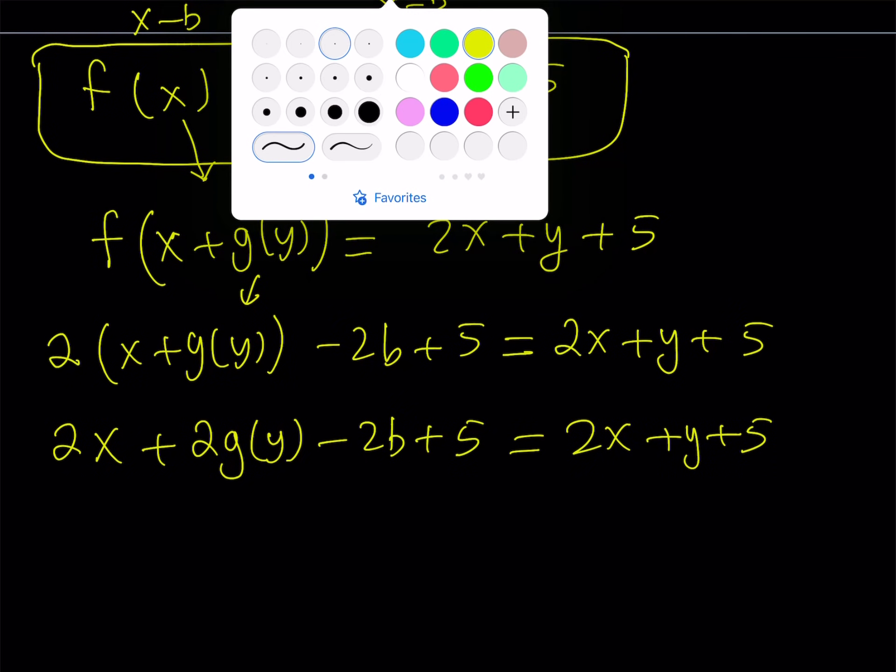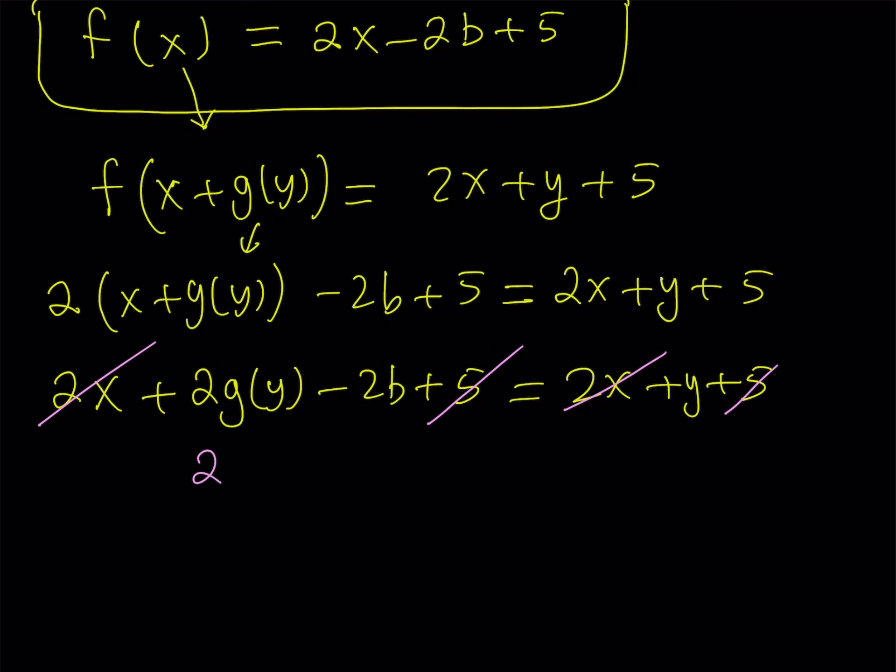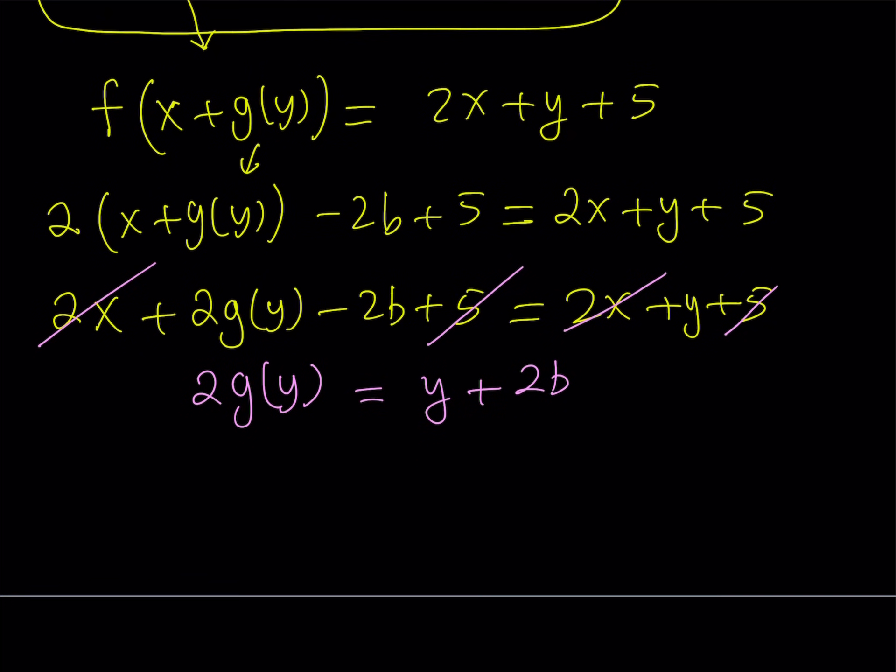Let's go ahead and replace x with x plus g of y here and see what we get. If you replace x with x plus g of y on the right-hand side, we get 2 times x plus g of y, and then minus 2b plus 5. And this is supposed to equal 2x plus y plus 5 from here. So this is the value that I got by using the definition of f of x. Now, this equality or this equation is very important. Take a look. 2x plus 2 times g of y minus 2b plus 5 equals 2x plus y plus 5. Now, I can get rid of some of the terms. 2x cancels out. 5 cancels out. And that leaves us with something simpler. However, this gives us 2 of g of y, and I can just add 2b to both sides, y plus 2b. Of course, my goal is to get the g of y or g of x, so I'm going to divide both sides by 2. Let's go ahead and do that. And this is going to give us g of y equals y over 2 plus b.